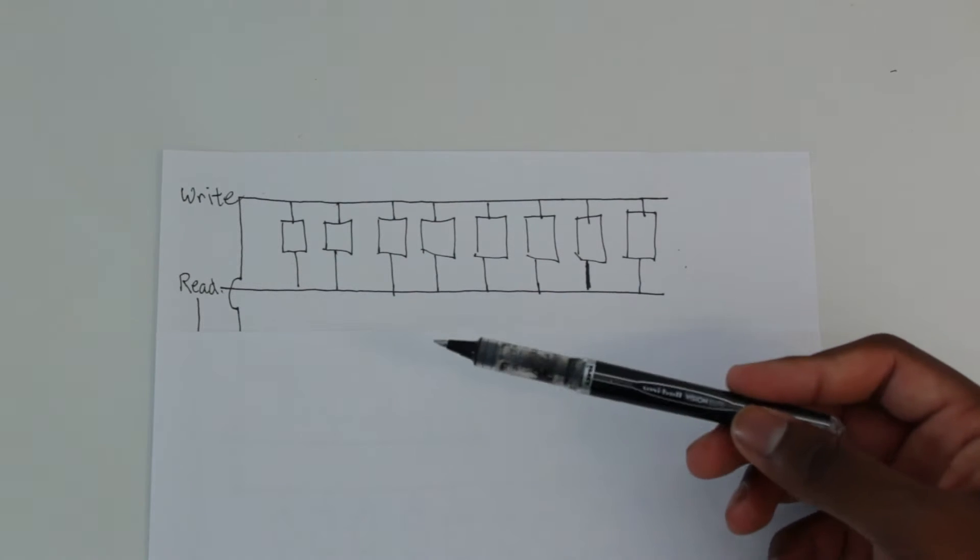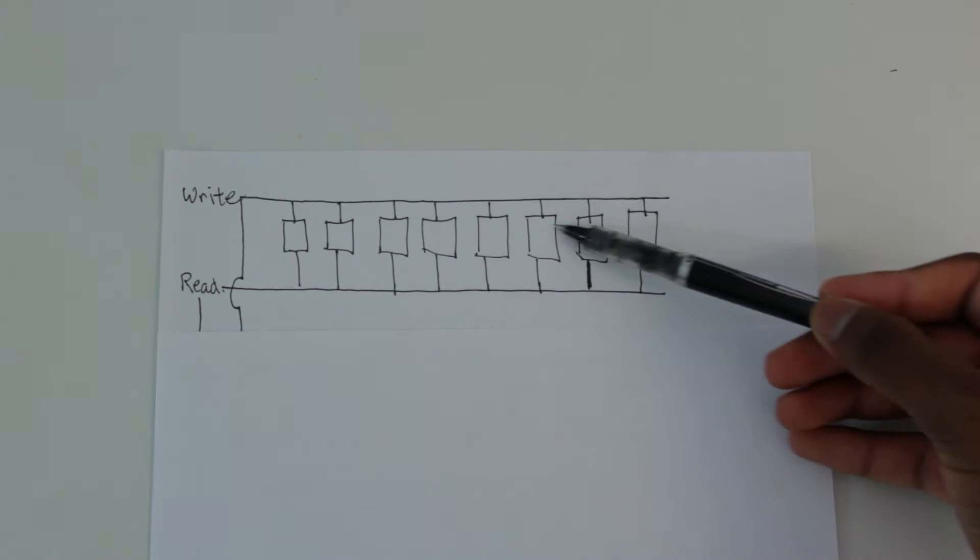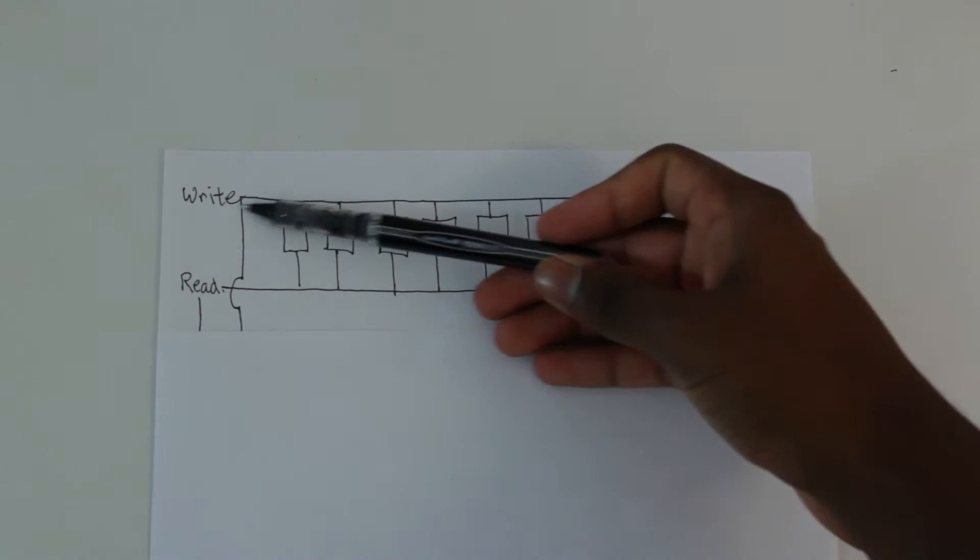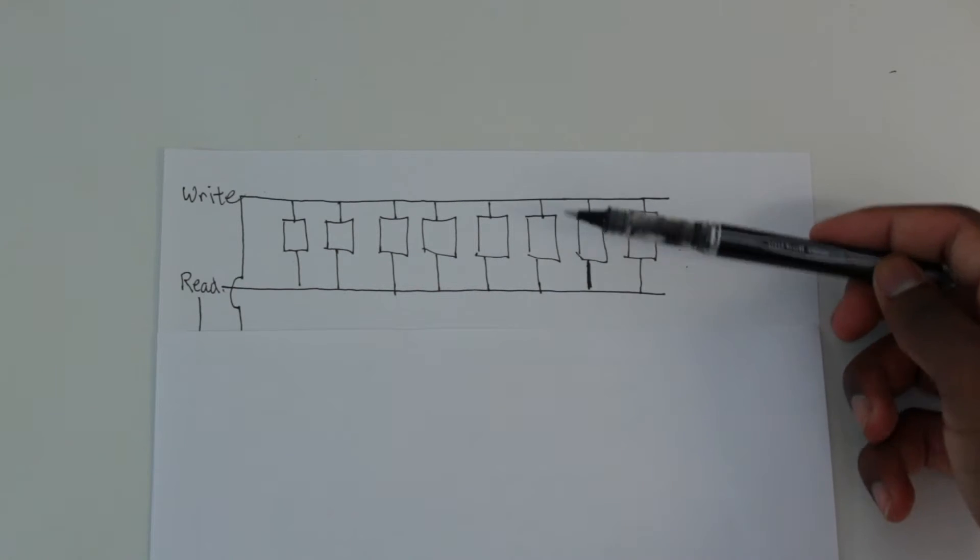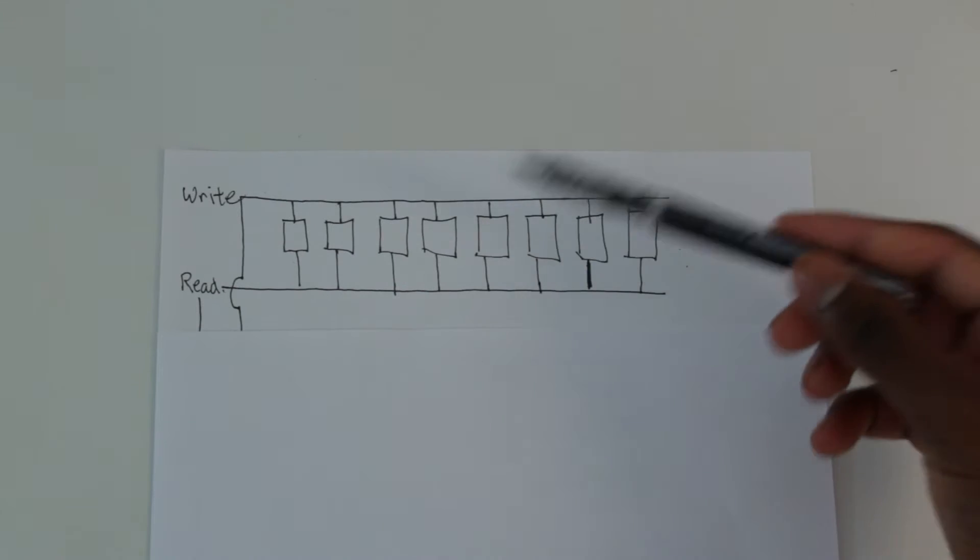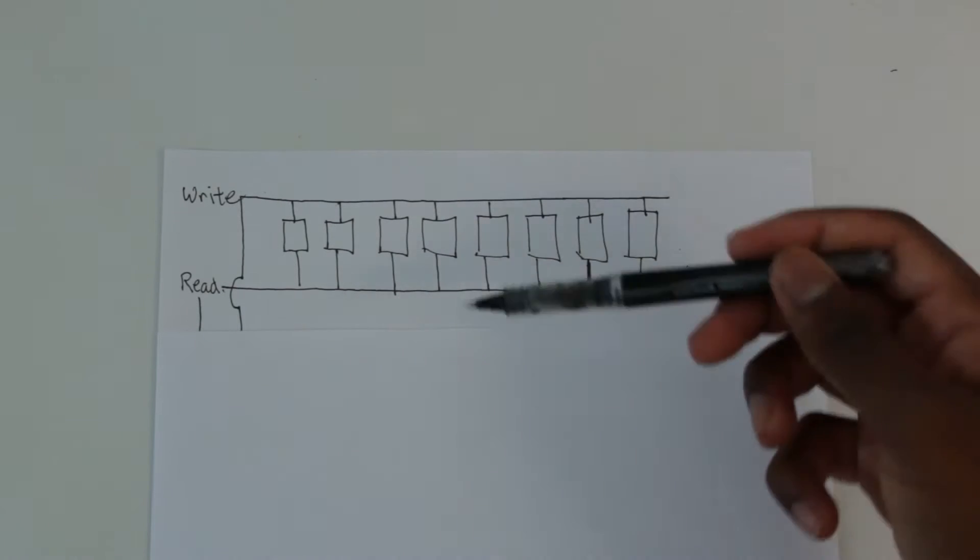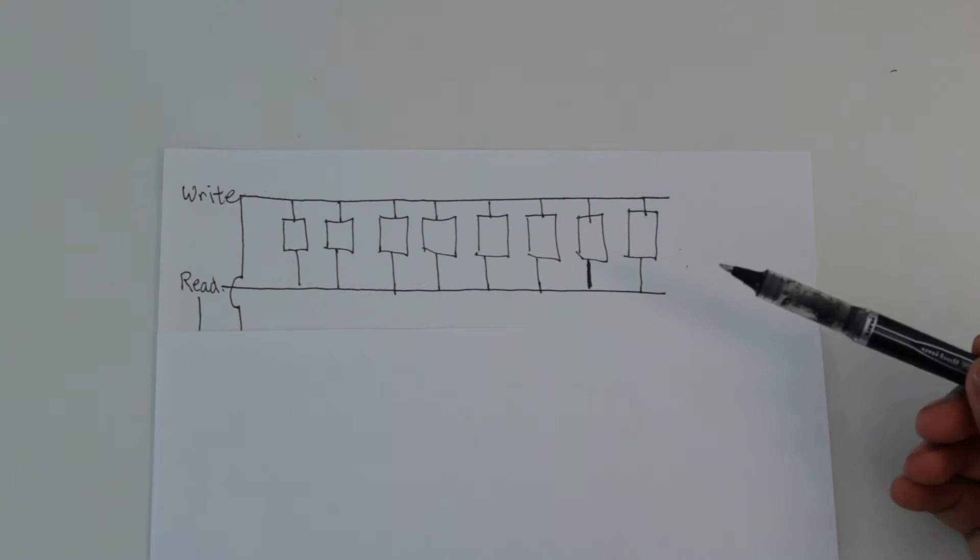So this is basically what we had before. We had our eight cells, which is our eight bits, and then we had a write line and a read line. And depending on whether we wanted to write or read, we could manipulate the bytes as such. Now I'm not going to go over exactly how we did this, because we did that in the last video or the video before that. So you can go ahead and watch those if you need a refresher.